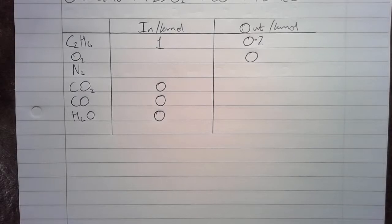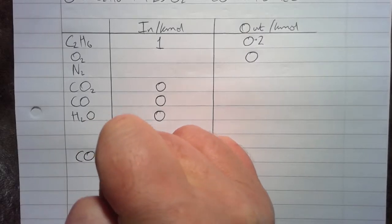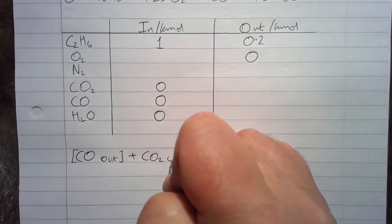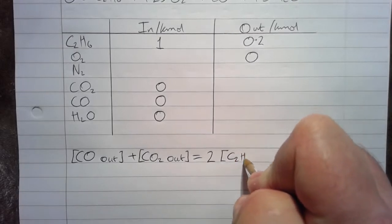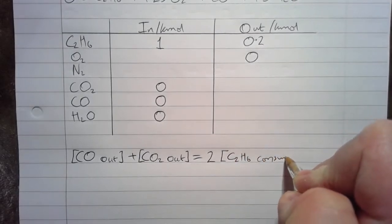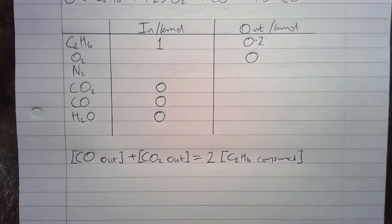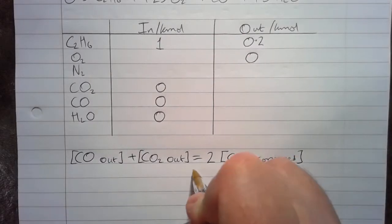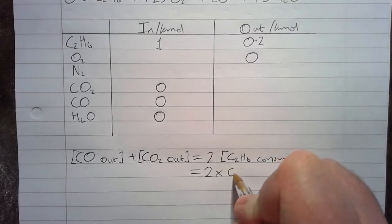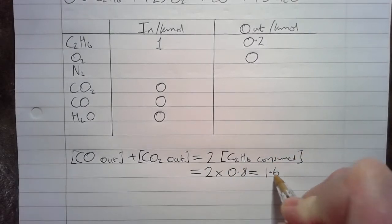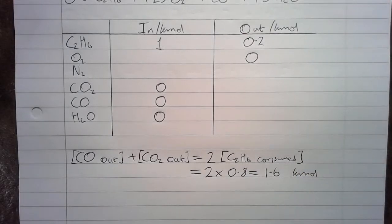We know that the CO out plus the CO2 out equals 2 times the C2H6 consumed, because there's two carbon atoms in each ethane converting to either one of those. And we know that the C2H6 consumed is 0.8 because it's 80% conversion, so it's 2 times 0.8 equals 1.6. So 1.6 K moles combined for the CO and the CO2 coming out.